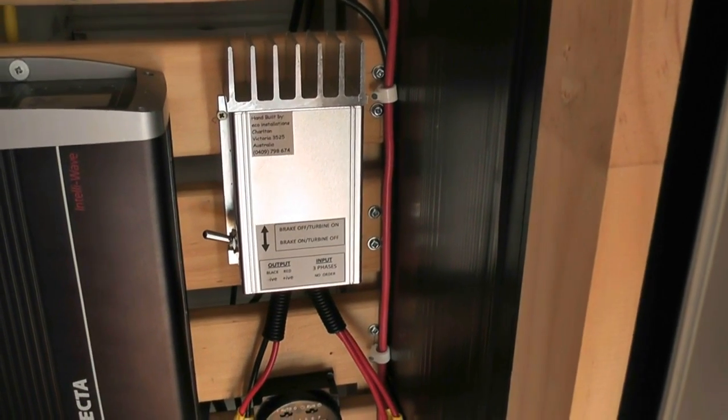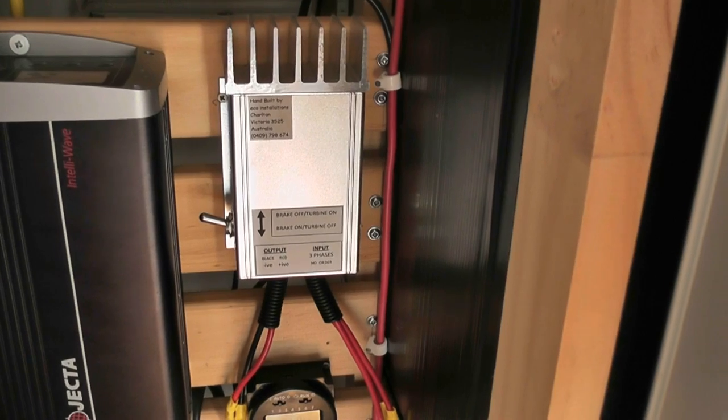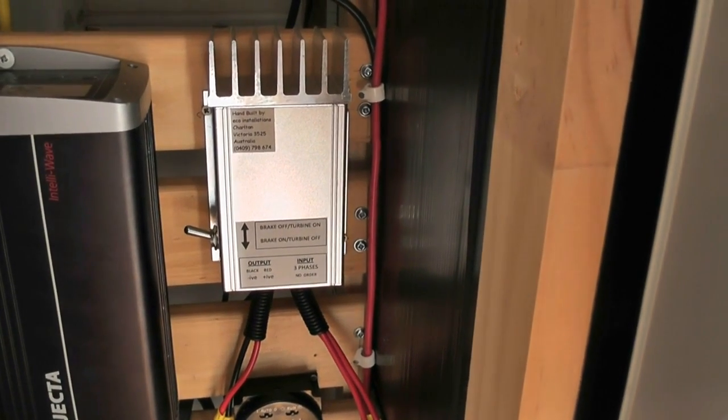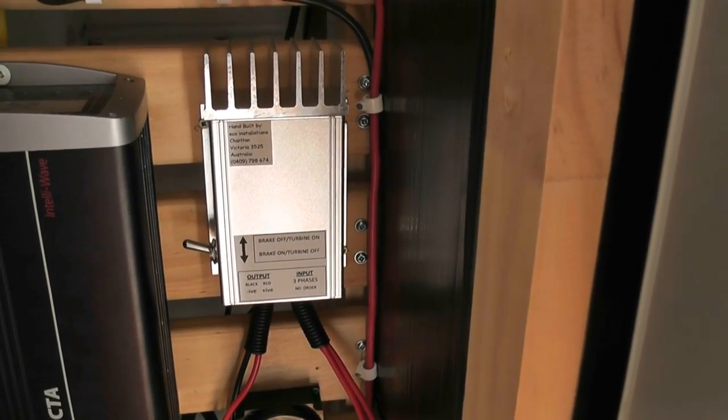Now that is the brake for the wind generator on the left hand side, and that's the rectifier. That comes from Eco Installations in Victoria, Australia. Great little unit. From there it comes out, we follow the wires down.